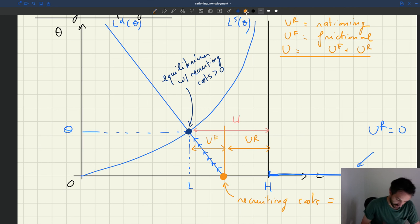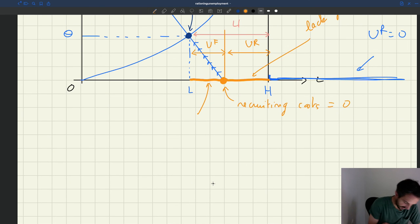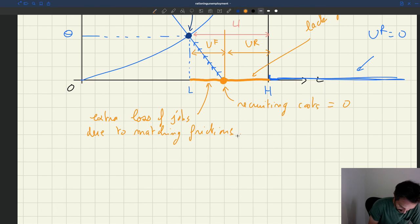So rationing unemployment here, that's the amount that we have here. So this is just a lack of job in the economy. And then that extra quantity that we have here, this is frictional unemployment. That's an extra loss of jobs due to matching frictions. And so that's frictional unemployment, and this here is rationing unemployment.